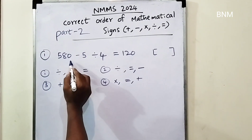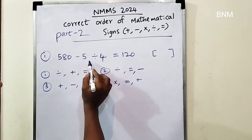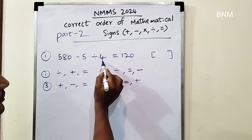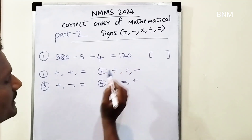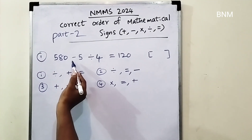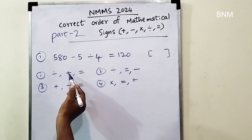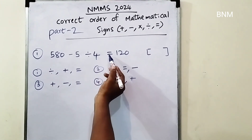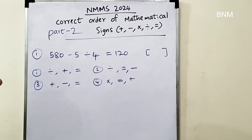580 minus 5 division 4 is equal to 120. The first operation is division, then addition, then equal.